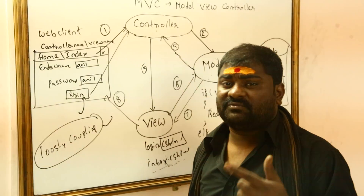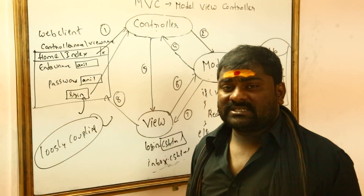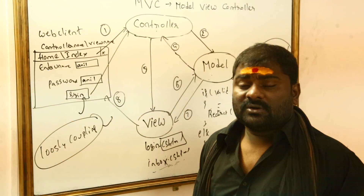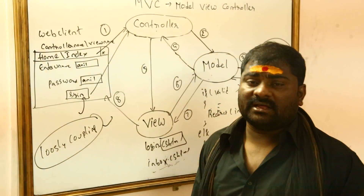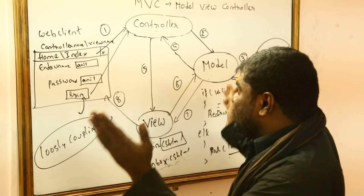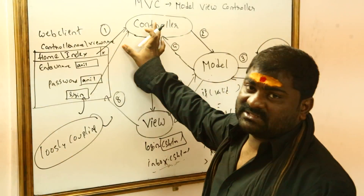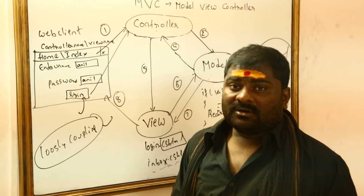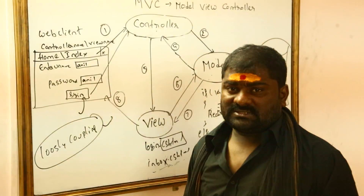Instead of testing the entire website every time, you can test portions of the code each time, making your work easier. Simultaneously, multiple developers can work in parallel — some on controllers, some on views, some on models — so application development proceeds faster.